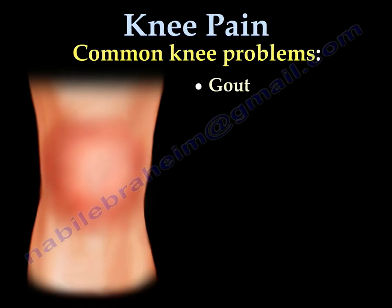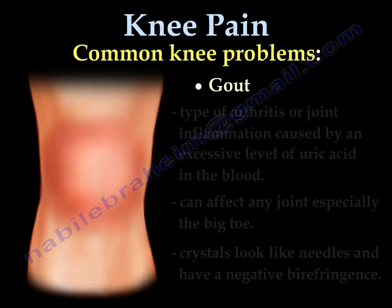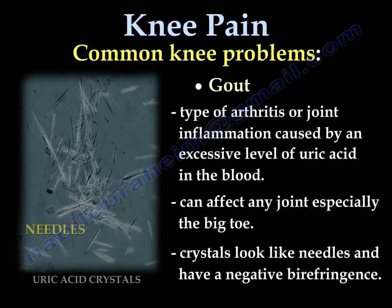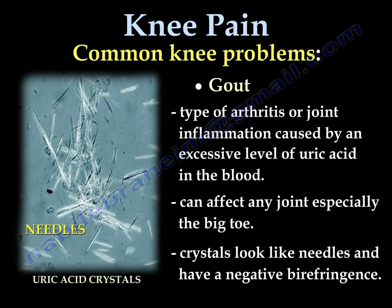Gout is an inflammatory arthritis caused by excessive levels of uric acid. It can affect any joint in the body, especially the big toe. The crystals appear needle-shaped and have negative birefringence when viewed under polarized light.